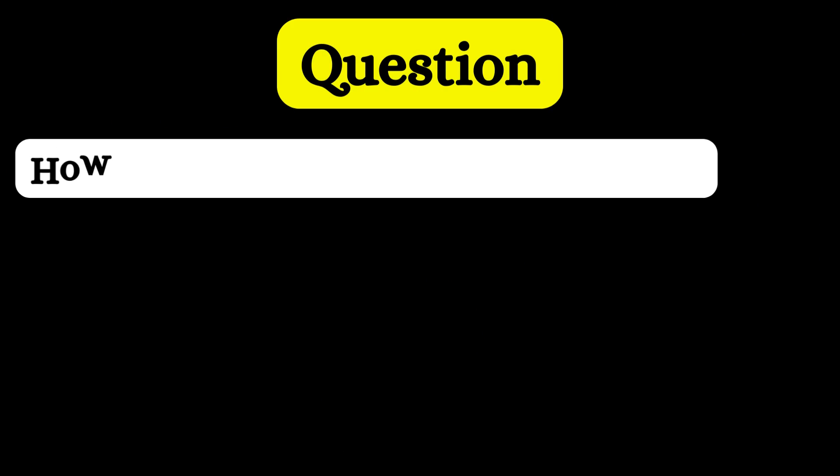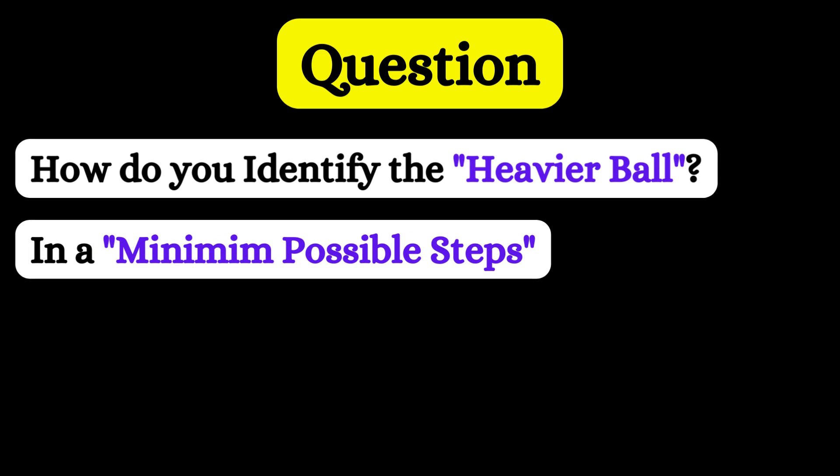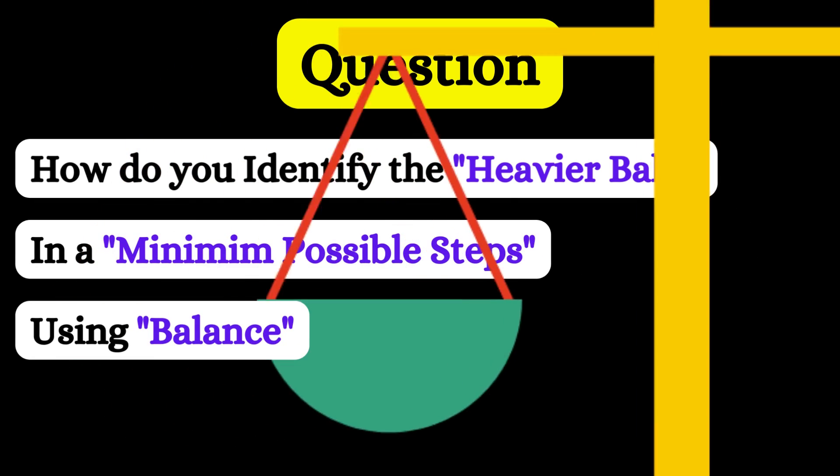Now the question is: how do you identify the heavier ball in minimum possible steps using a double pan balance?